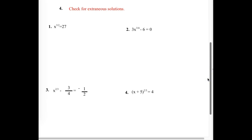Looking at our first example, x is being raised to a 3 halves power — that means we're cubing x and square rooting it. We want to undo that reverse process, so we're going to raise both sides to the reciprocal power. The reciprocal in this case would be 2 thirds. On the left side, the 3 halves and the 2 thirds power cancel each other out — power to a power, we multiply, and 3 halves times 2 thirds gives us 1 — so we have just a plain x on the left side.